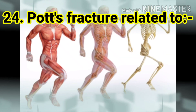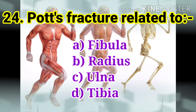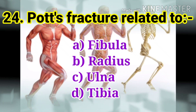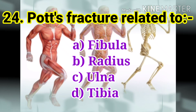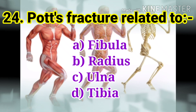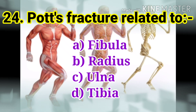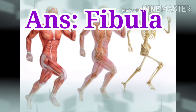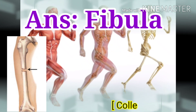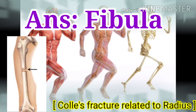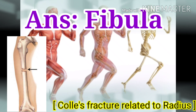The next question: Pott's fracture is related to which bone? The options are fibula, radius, ulna, and tibia. The answer is fibula. Pott's fracture is related to the fibula, and Colles' fracture is related to the radius.